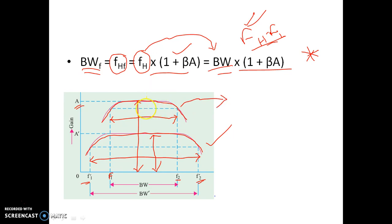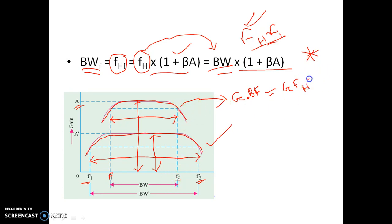Consider the without-feedback gain versus frequency graph. For this case, what is mid-band gain times bandwidth? That is G × BW — gain bandwidth product for the amplifier without feedback — and that is equal to G × FH, that is gain times higher cut-off frequency. Here FH is F2. So we can write gain bandwidth product as G × F2, where F2 is this higher cut-off frequency.